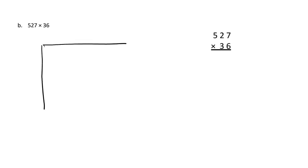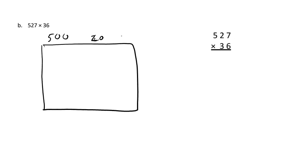All right, this next one is a three-digit number, and they put the larger number on top. So let's put 527 on top of our area model: 500, 20, and 7. Then we have 36 on the bottom, so we start with 30 and 6.